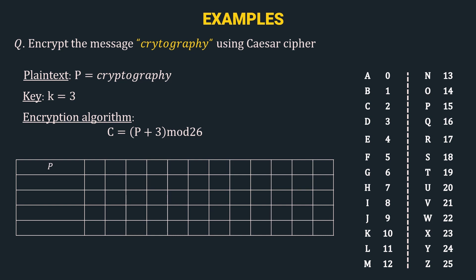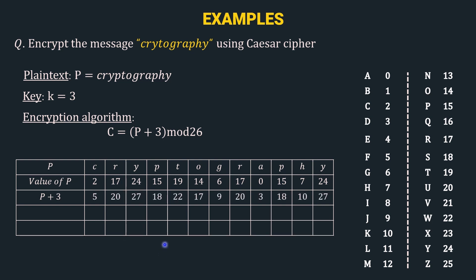The first row is P, so we have 'cryptography' here. The next row is the value of P — referring to the mapping table, we get the corresponding numbers. The next operation is P + 3, that is we add the key to the plain text. So 2 + 3 gives us 5, 17 + 3 gives us 20, and similarly using the same logic we have inputted all other numbers.